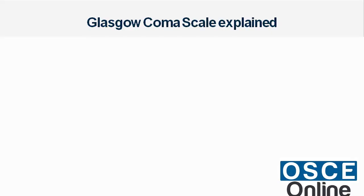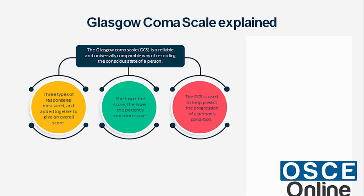The Glasgow Coma Scale is a reliable and universally comparable way of recording the conscious state of a person. Three types of response are measured and added together to give an overall score — the lower the score, the lower the patient's conscious state. The GCS is used to help predict the progression of a person's condition.